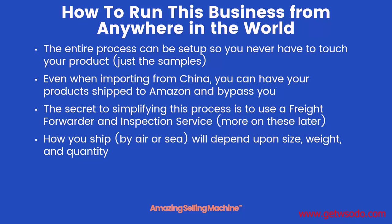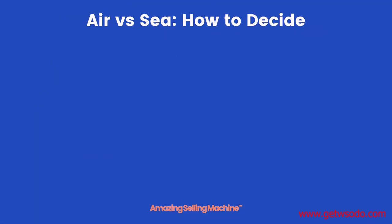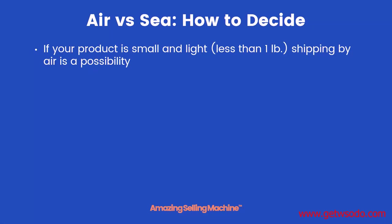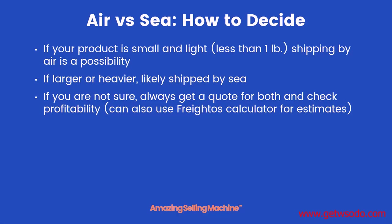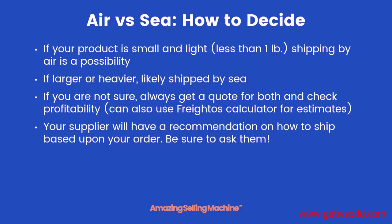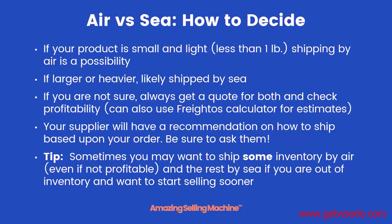How you ship — by air or by sea — will depend on the size, weight, and quantity of your first inventory order. If your product is light and small, less than a pound basically, shipping by air is a possibility. If it's larger or heavier, it's likely to be shipped by sea. If you're not sure, it's always a good idea to get a quote for both and check for profitability. You can also use the Freightos calculator to get good estimates, and be sure to ask your supplier for their recommendation.